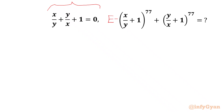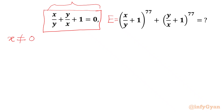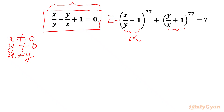So let's get started. Our required expression is E and this equation is known to us. Now, x cannot be equal to 0, y cannot be equal to 0, and x cannot be equal to y. We will use substitution: let x/y + 1 = alpha and y/x + 1 = beta.